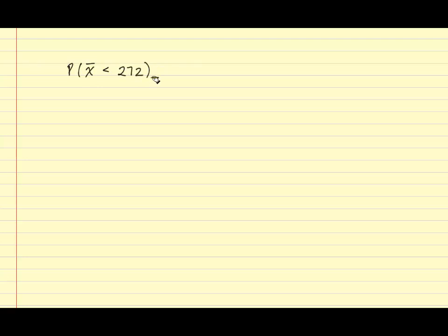To find the probability, we're going to first convert X bar to a Z score and then use the normal table to find the probability. Recall, the Z score formula to use is Z equals X bar minus mu over sigma divided by the square root of n.